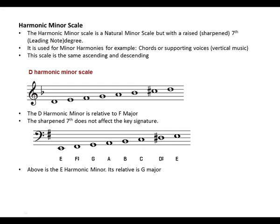We also have what we call the harmonic minor scale. With the harmonic minor scale, it is the natural minor scale but with a raised or sharpened seventh. It is used for minor harmonies, for example, chords or supporting voices — vertical music — that support the melody. This scale is the same ascending and descending.